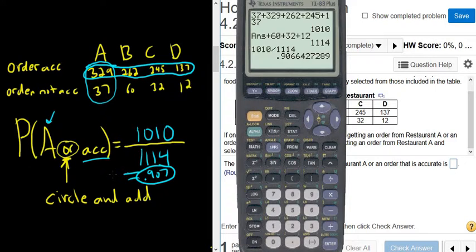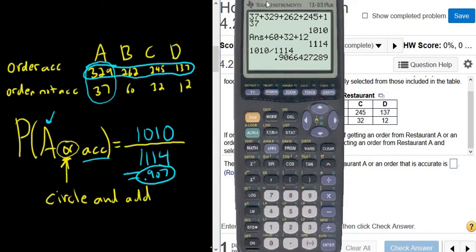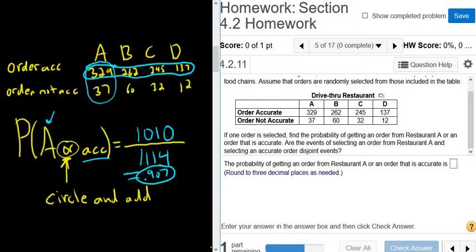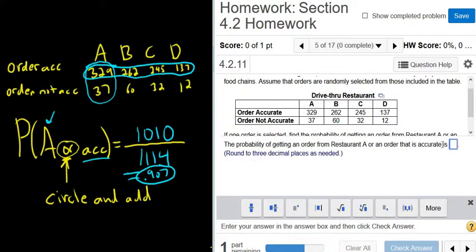So again, the key is whenever you see an or and you have a table, you want to circle and add, and that number goes up top, and on the bottom, you just have the total, so you just add up all the numbers and put them on the bottom. Let's try it. 0.907. Good stuff.